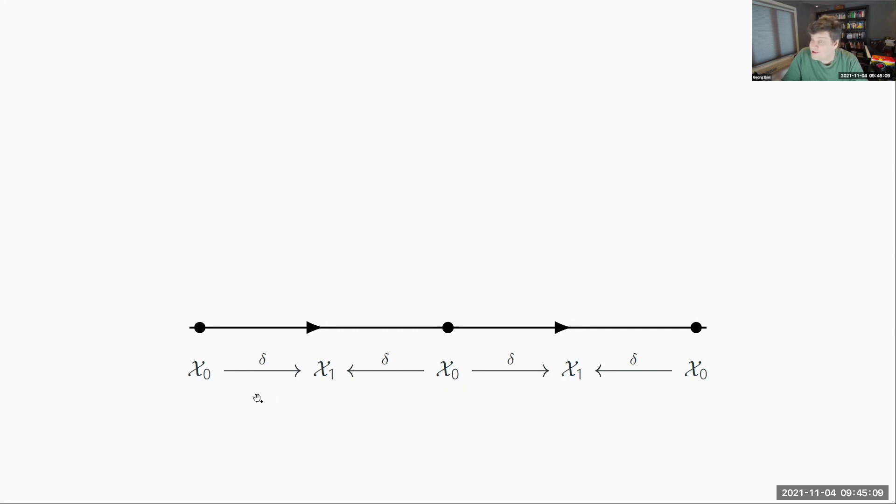There's also other maps that you could consider. We could go the other direction. We could flip all the arrows and then we get the boundary operators, going from the one simplex to the zero simplex. We're just going to consider the co-boundary operator in these constructions. It doesn't really matter. Just flip arrows if you want a different kind of construction here.